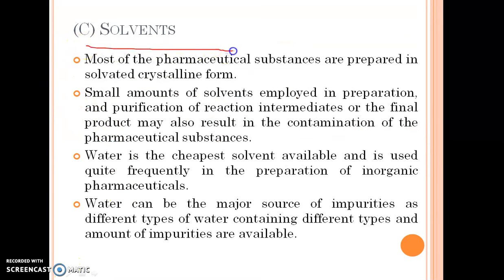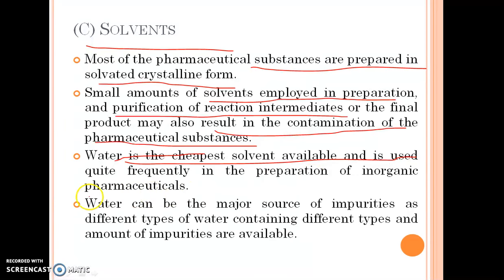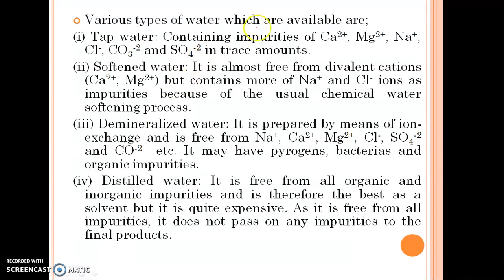Third one is solvents. Most pharmaceutical substances are prepared in solvated crystalline form. Small amounts of solvents employed in preparation and purification of reaction intermediates or the final product may also result in contamination. Water is the cheapest solvent and is used quite frequently in the preparation of inorganic pharmaceuticals. Water can be a major source of impurities, as different types of water contain different types and amounts of impurities. Tap water contains impurities of calcium, magnesium, sodium, chloride, carbonate and sulphate ions in trace amounts.